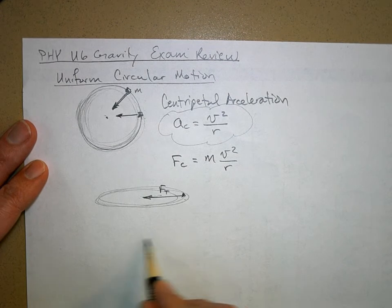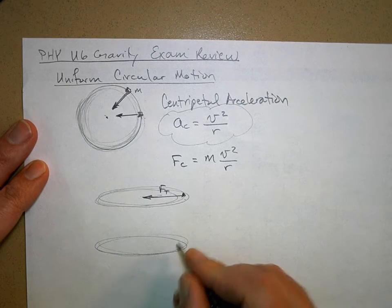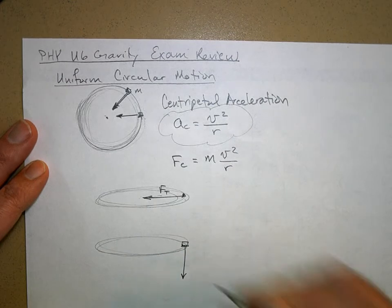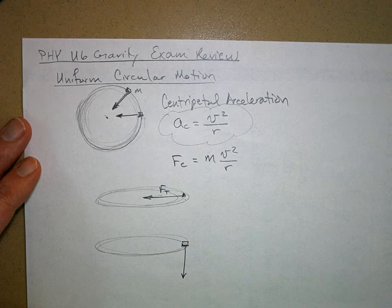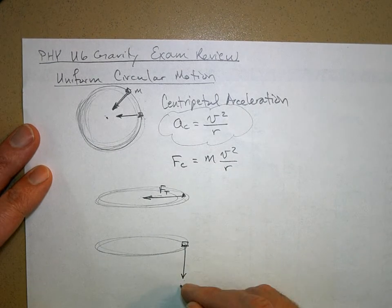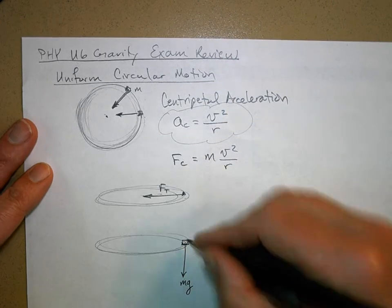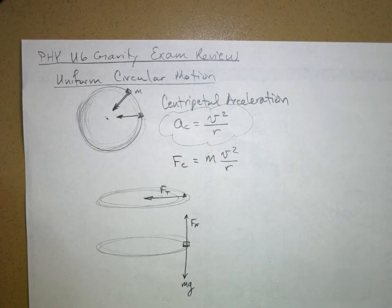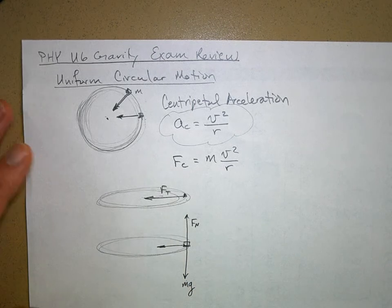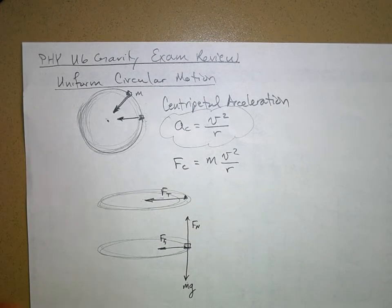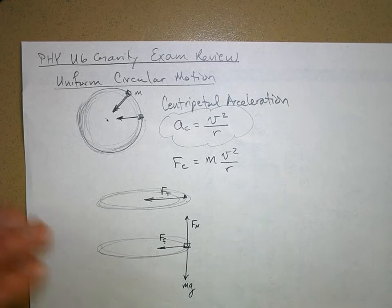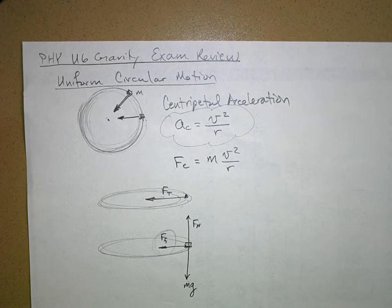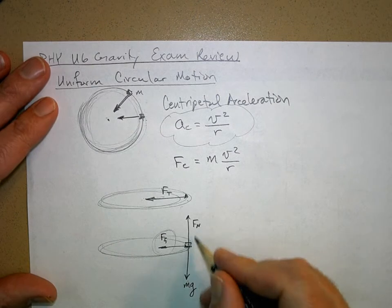The second type is a car moving in a circle. Looking at an oblique view from above, gravity pulls the car down — that's mg — and the normal force supports the weight of the car, so the normal force equals the weight. It's the friction between your wheels and the road that makes you go in a circle, so in this case the friction force is the centripetal force.